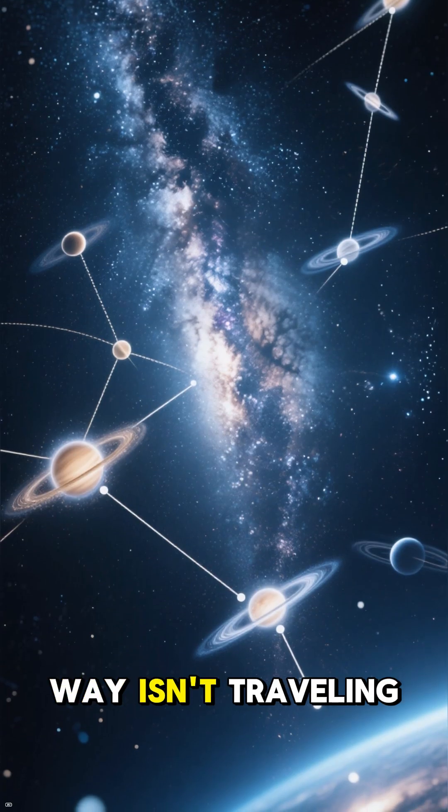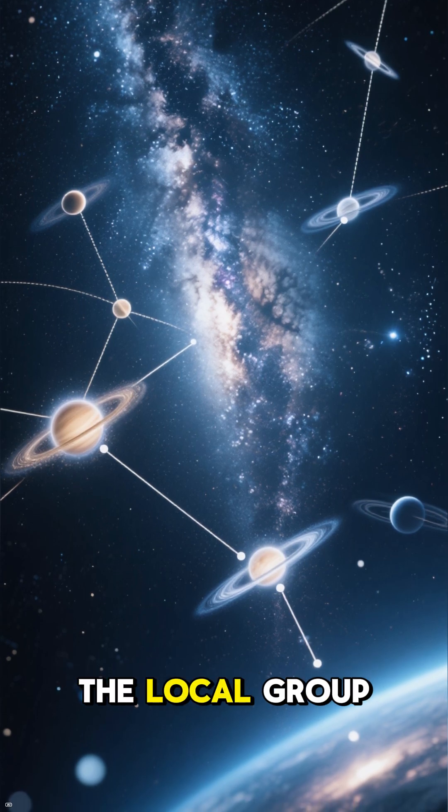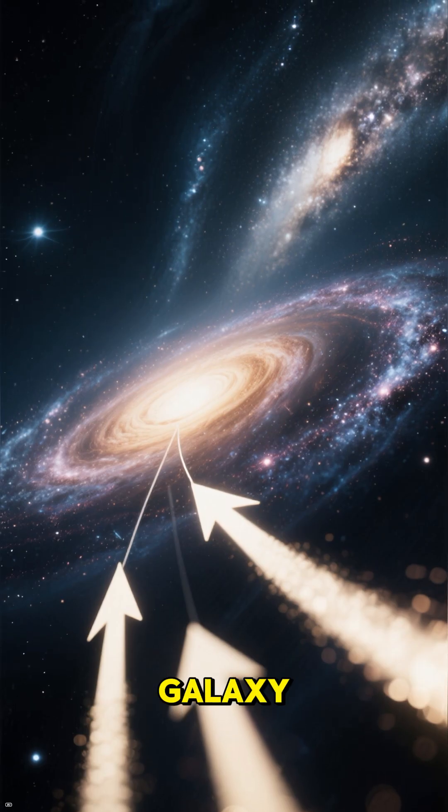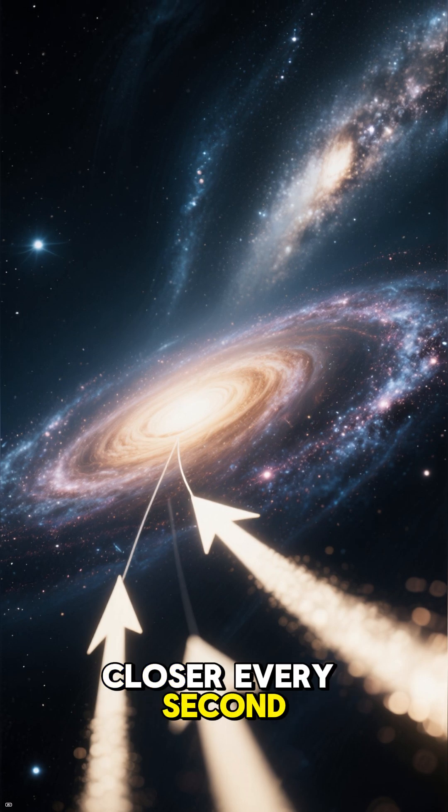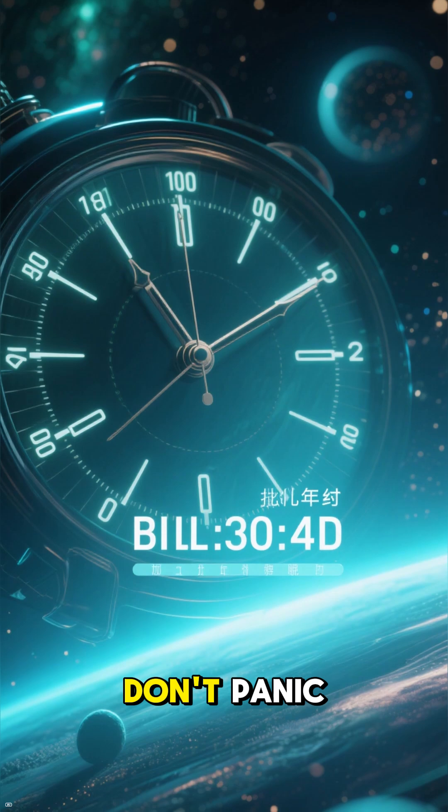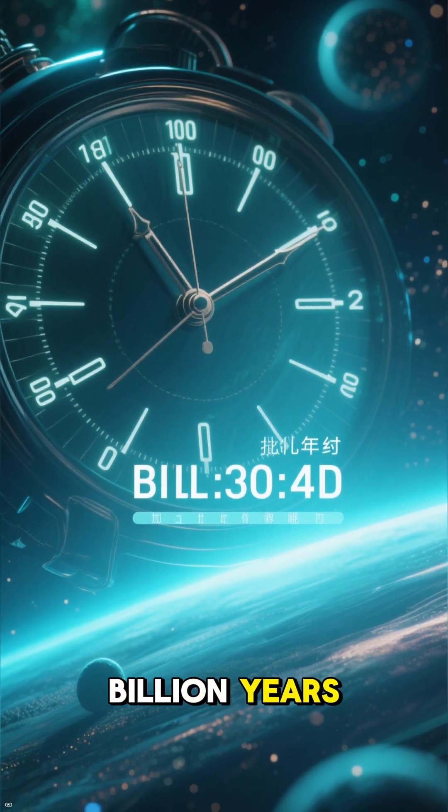But the Milky Way isn't traveling alone. It's part of a collection of about 80 galaxies called the Local Group. Our biggest neighbor is the Andromeda Galaxy, and it's getting closer every second. In fact, Andromeda is on a direct collision course with us. Don't panic, though. The merger won't happen for another 4 to 5 billion years.